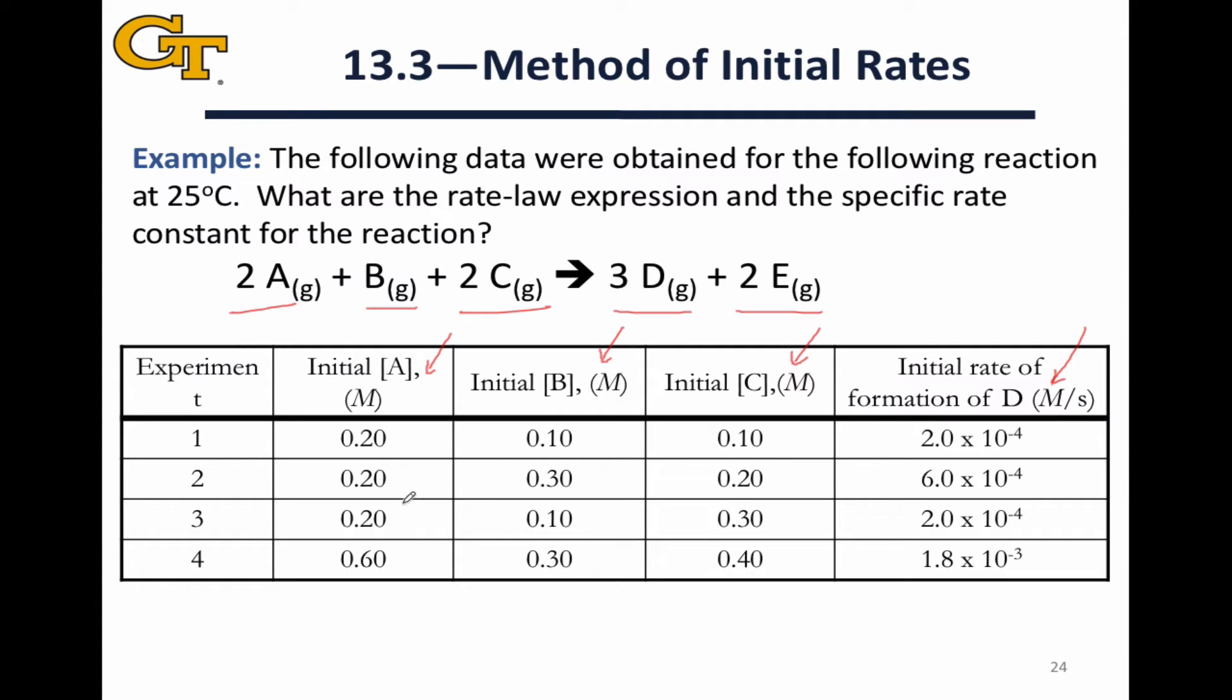If I look, for example, at the concentration of A column, I can see that in experiments one through three, that concentration is held constant. If I look at the B column, I see that in experiments one and three, that concentration is held constant. And if I look at the C column, I see that in none of these experiments is the concentration of C held constant.